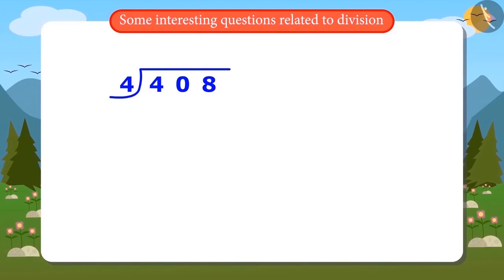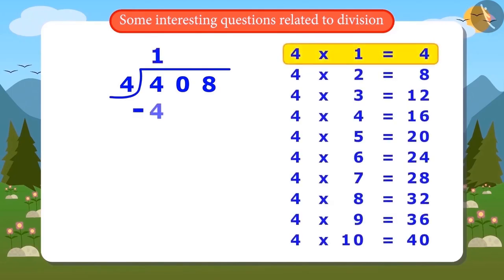Now, we will start dividing. 4 ones are 4. Remaining is 0. Now, write down the next number 0.